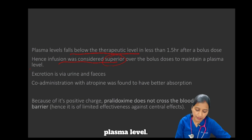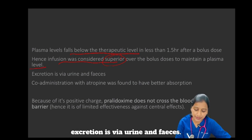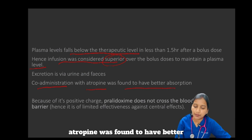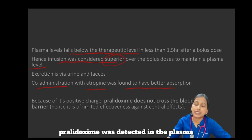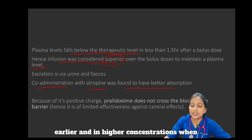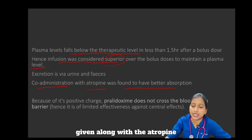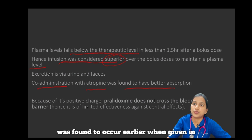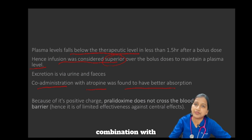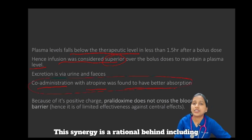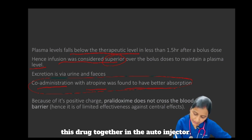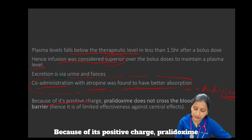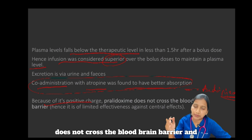Administration is via urine and feces. Co-administration with atropine was found to have better absorption — pralidoxime was detected in the plasma earlier and with higher concentrations when given along with atropine. Conversely, atropinization was found to occur earlier when given in combination with pralidoxime. This synergy is the rationale behind including both drugs together in the auto-injector.